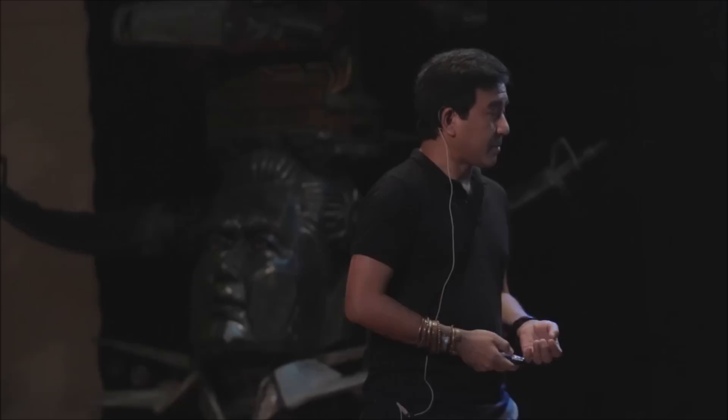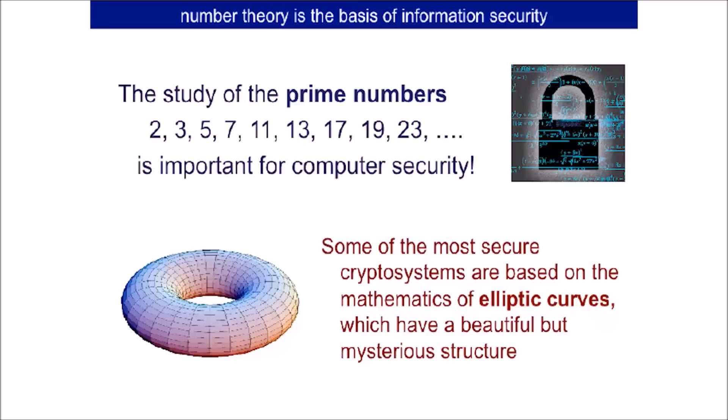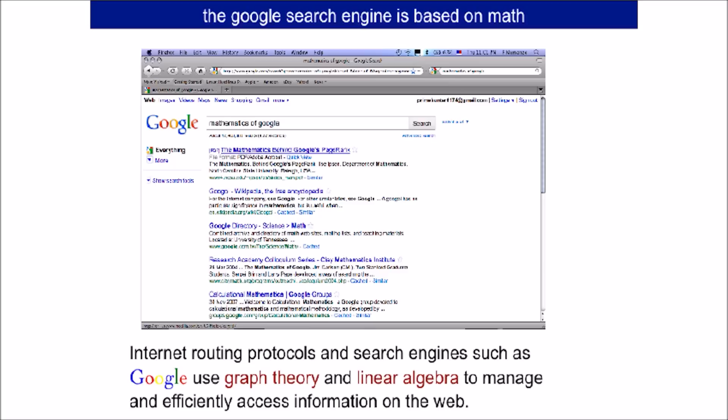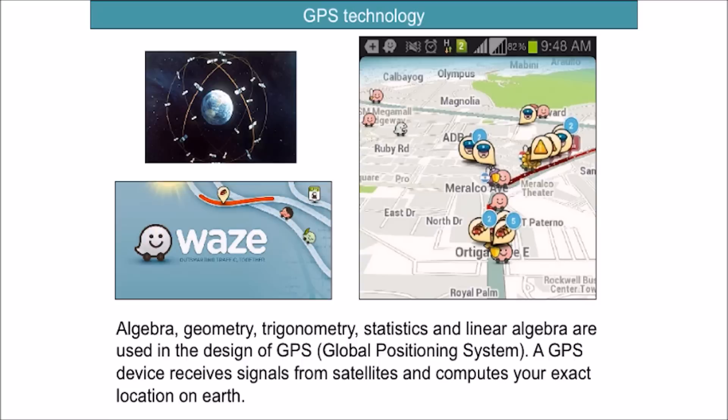Prime numbers, we know, are the numbers that cannot be divided. But they are very useful. They are the building blocks of numbers. But some of the most difficult computational problems in mathematics are built from prime numbers. That difficulty is the basis for computer security. So we actually use prime numbers every day without knowing it. Of course, we Google every day. Google was invented by a computer science student and a mathematics student. It's mathematics working behind the scenes. Using mathematics such as linear algebra and graph theory to help us efficiently access information on the web.